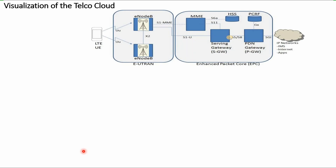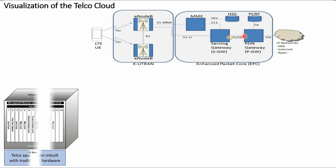If I visualize the telco cloud, it will look like this. We have a typical LTE network diagram with RAN and the core network. This is a telco application built with traditional hardware - a traditional telco node without any cloudification. Let's assume this is an NSGW or a GGSN, wherein you have a proprietary hardware rack with cards and software running inside the cards. Everything is proprietary - both the hardware and the software. This is before the cloudification of the telco nodes.